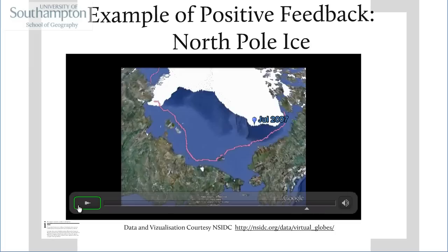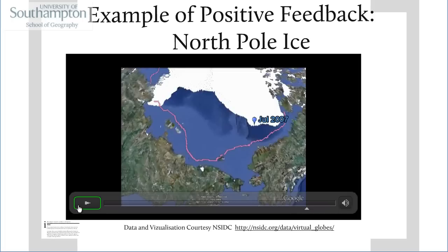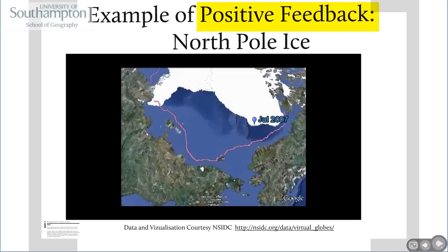What you can see is the ice has retreated massively from the average extent, and it's revealed this big patch of dark blue sea. What happens is that dark sea absorbs sunlight much more than the white ice, so the water subsequently heats up, and as it heats up it obviously melts the ice more. So that's a positive feedback situation.